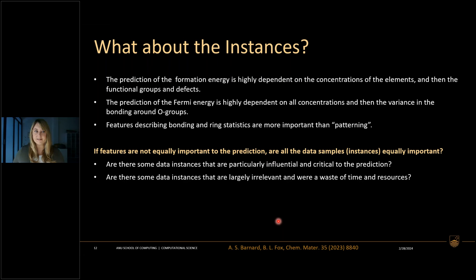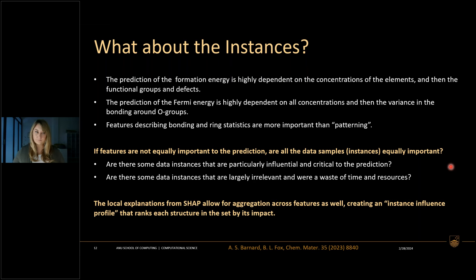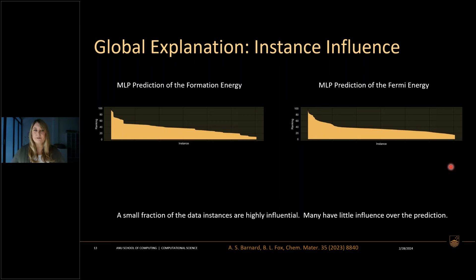But what about individual instances? Are all 1,600+ data instances equally important? Are there some experiments or simulations that are less important — nuisance instances — and some that are critical? It is possible to use Shapley values to aggregate local explanations across features and create an instance influence profile that ranks the impact or importance of each individual data point. We can see that some instances are much more influential than others, and there are discontinuities where something is changing.